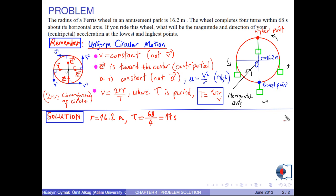Using the formula v equals 2πr over T, we can find the centripetal acceleration.